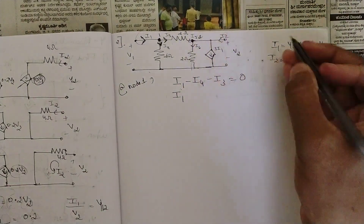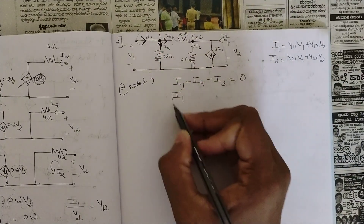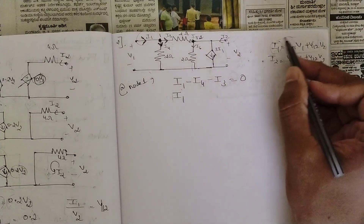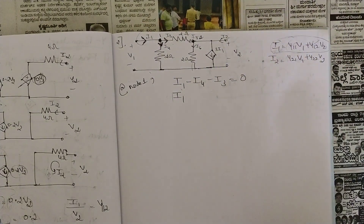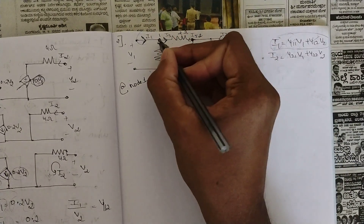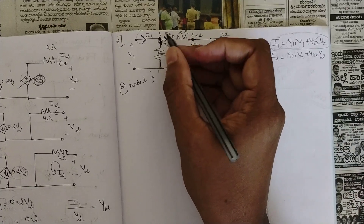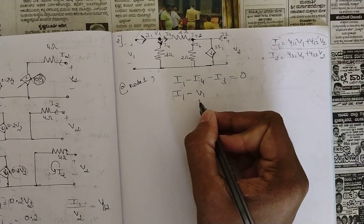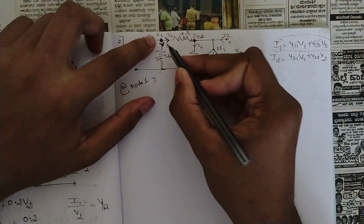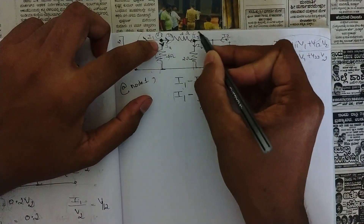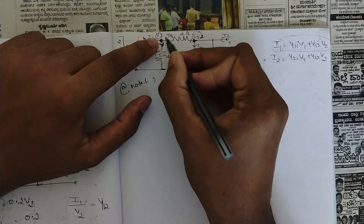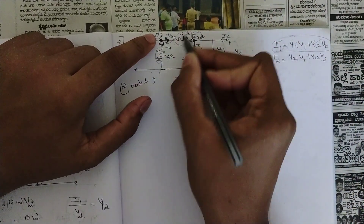Keep I1 as it is; substitute I4 and I3. I4 is the branch current using I = V/R: the voltage is V1 and the resistance in that branch is 2 ohms, so I4 = V1/2. I3 is between node 1 and node 2, so I3 = (V1 − V2)/2 — V1 minus V2 because current flows between these two nodes, divided by the resistor in that branch which is 2 ohms. Setting the KCL equation equal to zero.